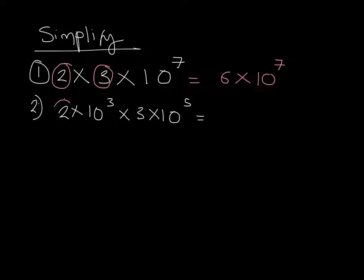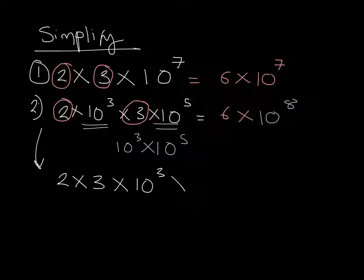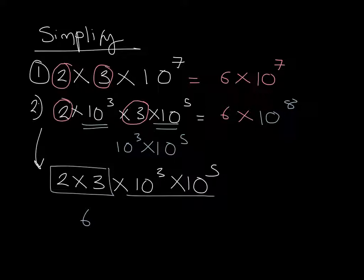Now, we're going to multiply the numerical parts together: 2 multiplied by 3 gives us 6. We then need to make sure this is in standard form, so it's times 10 to the power of — we have 10 to the 3 multiplied by 10 to the power of 5. We add the indices, giving us 10 to the power of 8. We've essentially rewritten this as 2 × 3 × 10³ × 10⁵ because multiplication is commutative. This simplifies to 6 × 10 to the power of 8, our final answer.